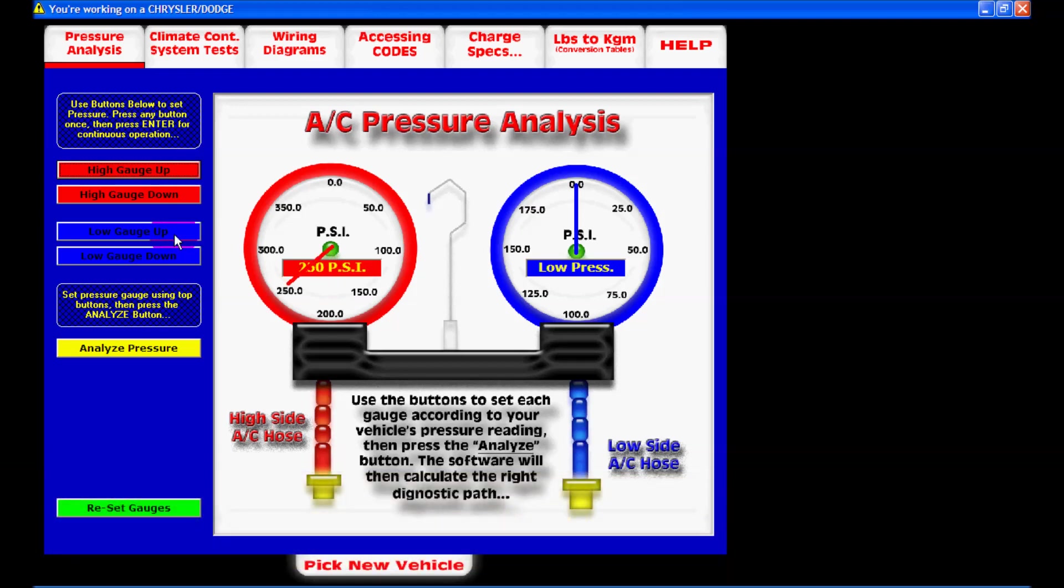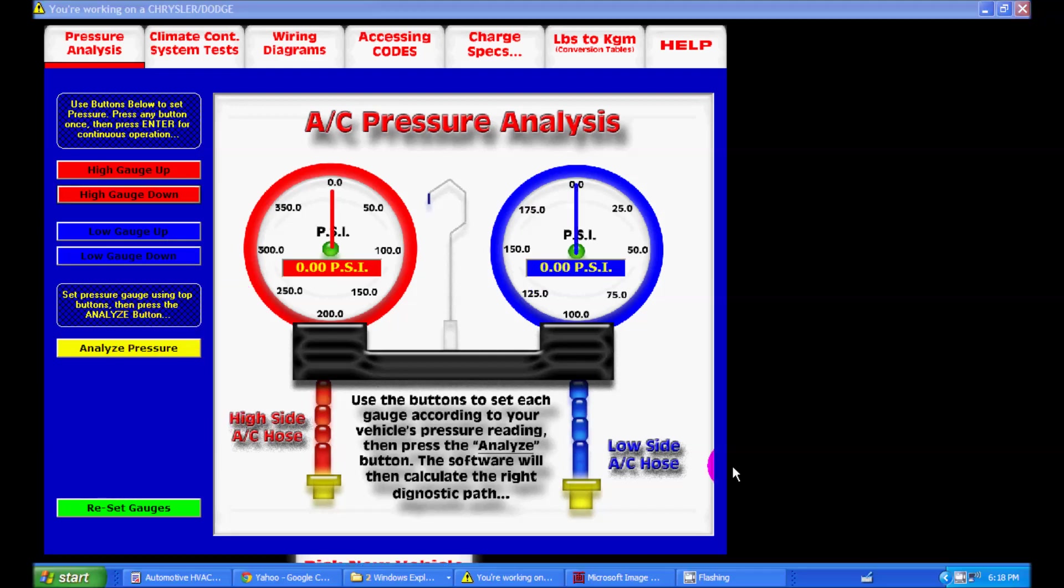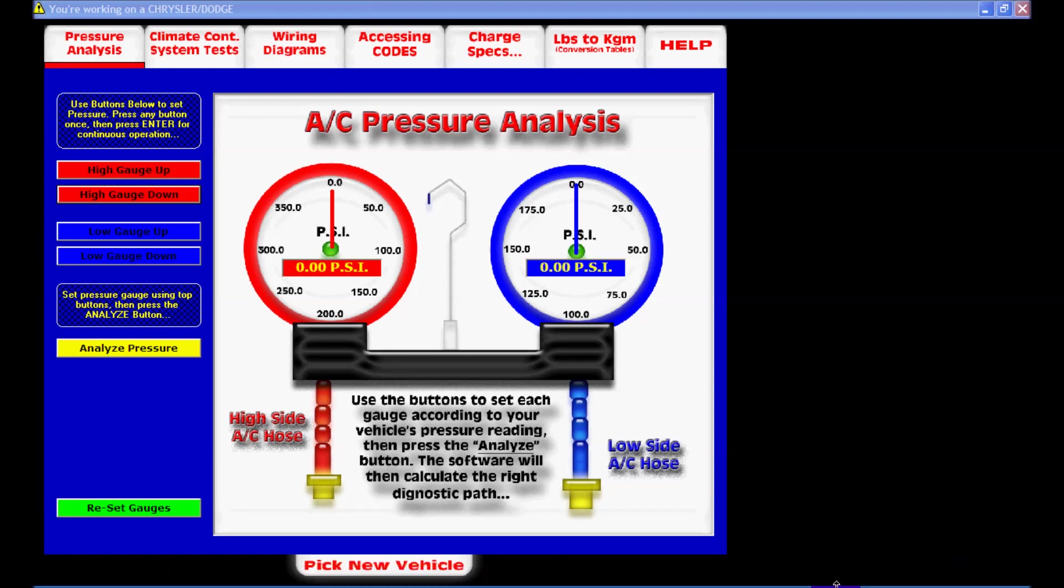So you don't have to keep pressing it to change the gauge, you just click once and then press the enter key, and you can command the gauges. So you input the pressures in there depending on whatever you have. That's how you work the software, it's very simple, and then you click analyze pressure, the yellow key.